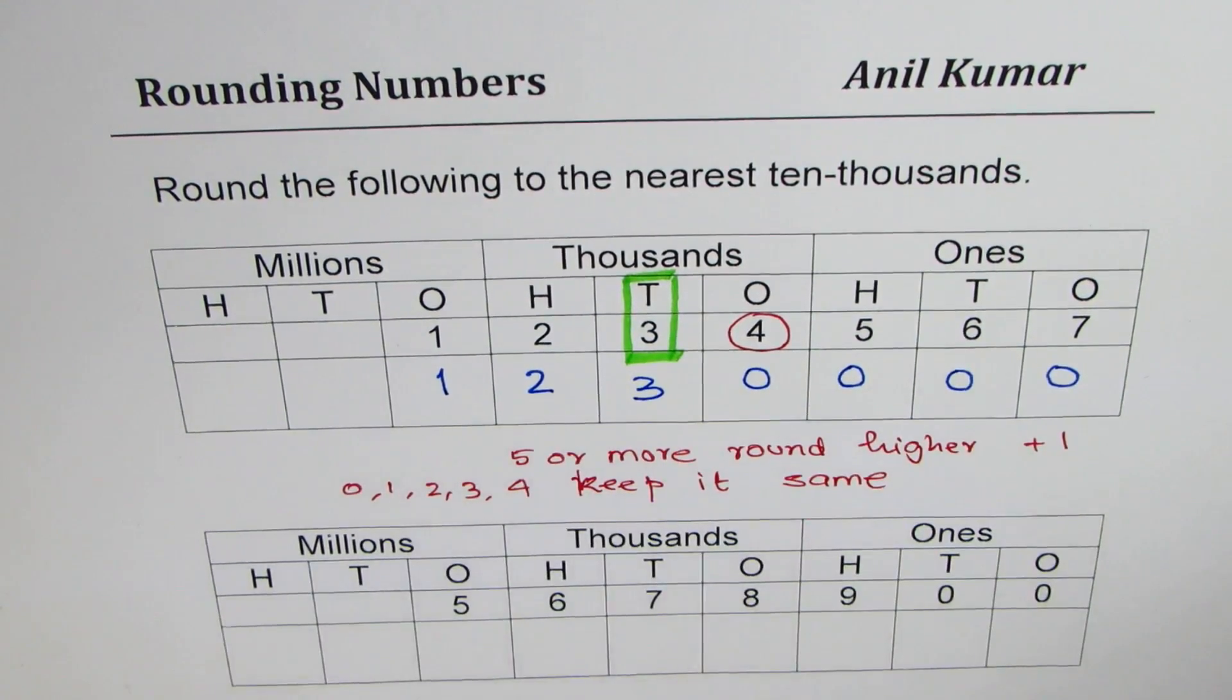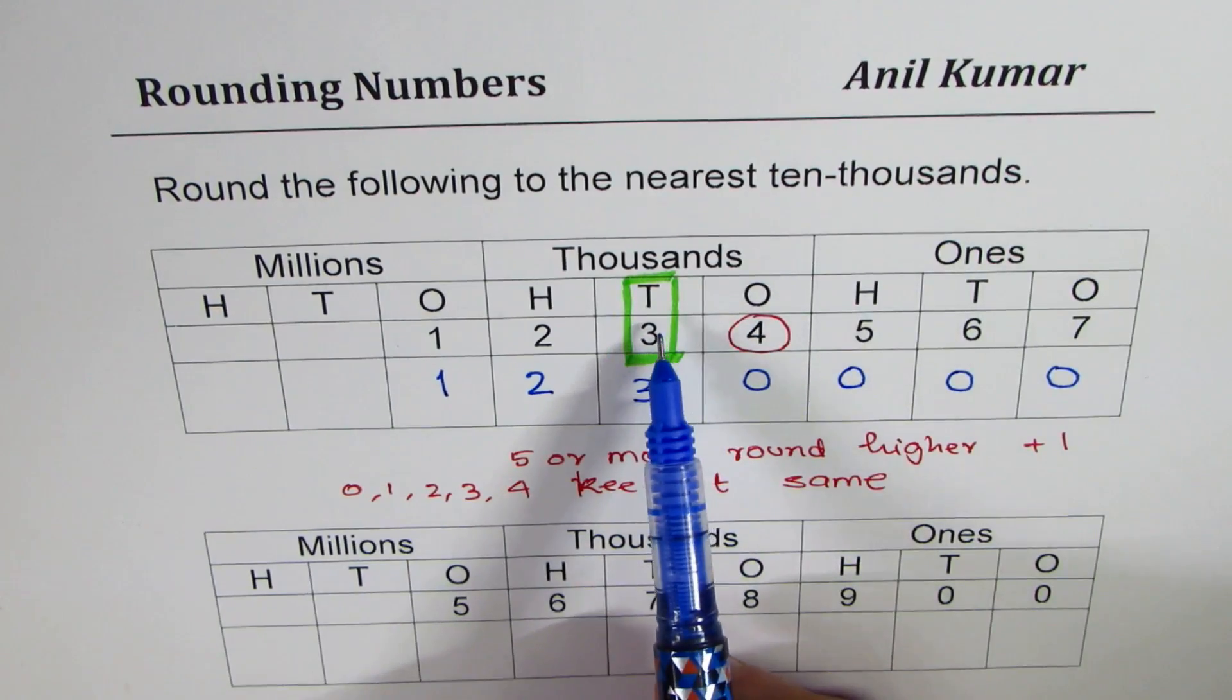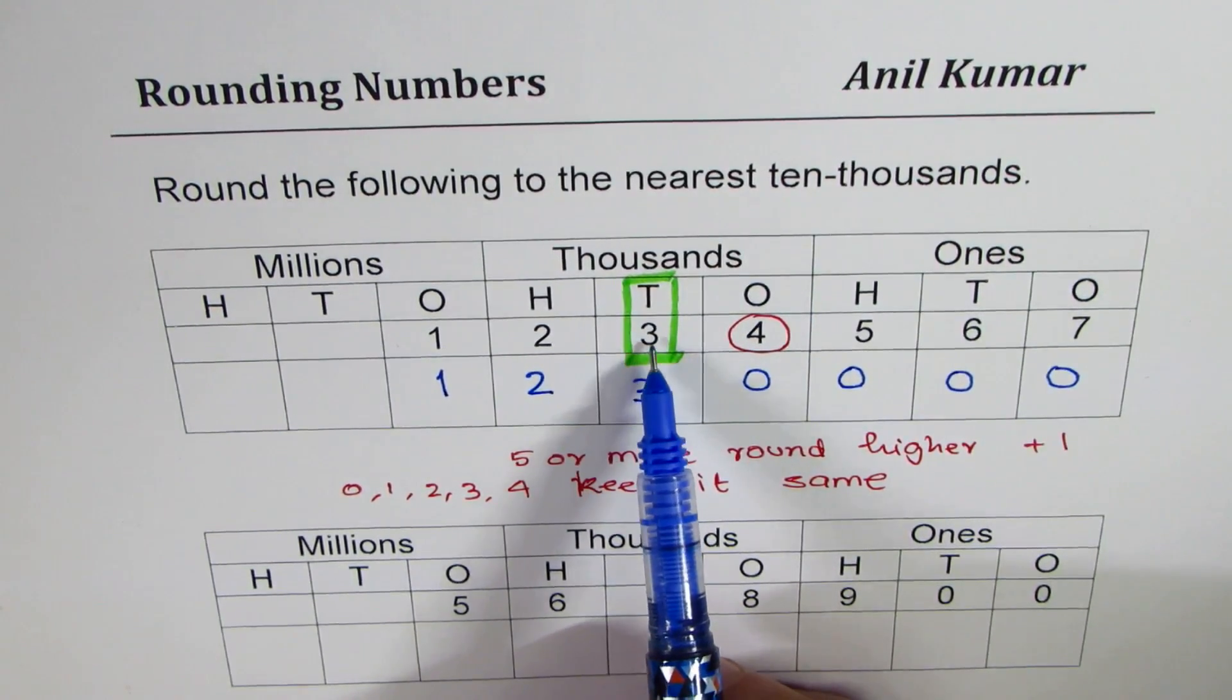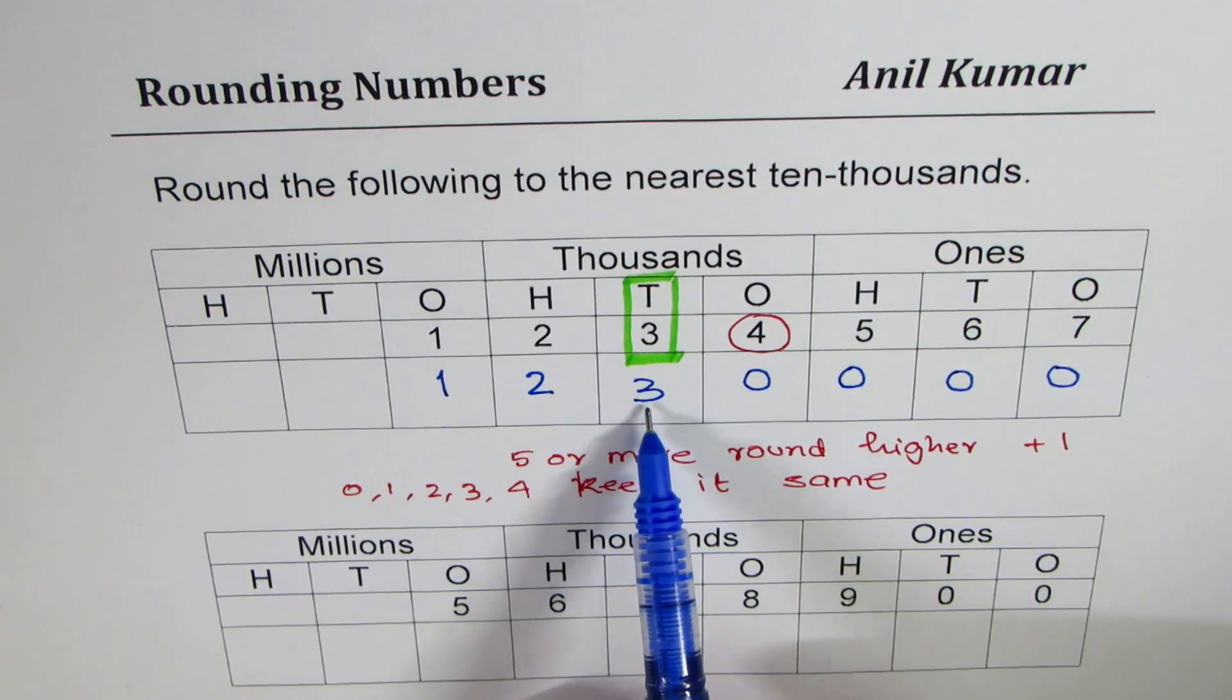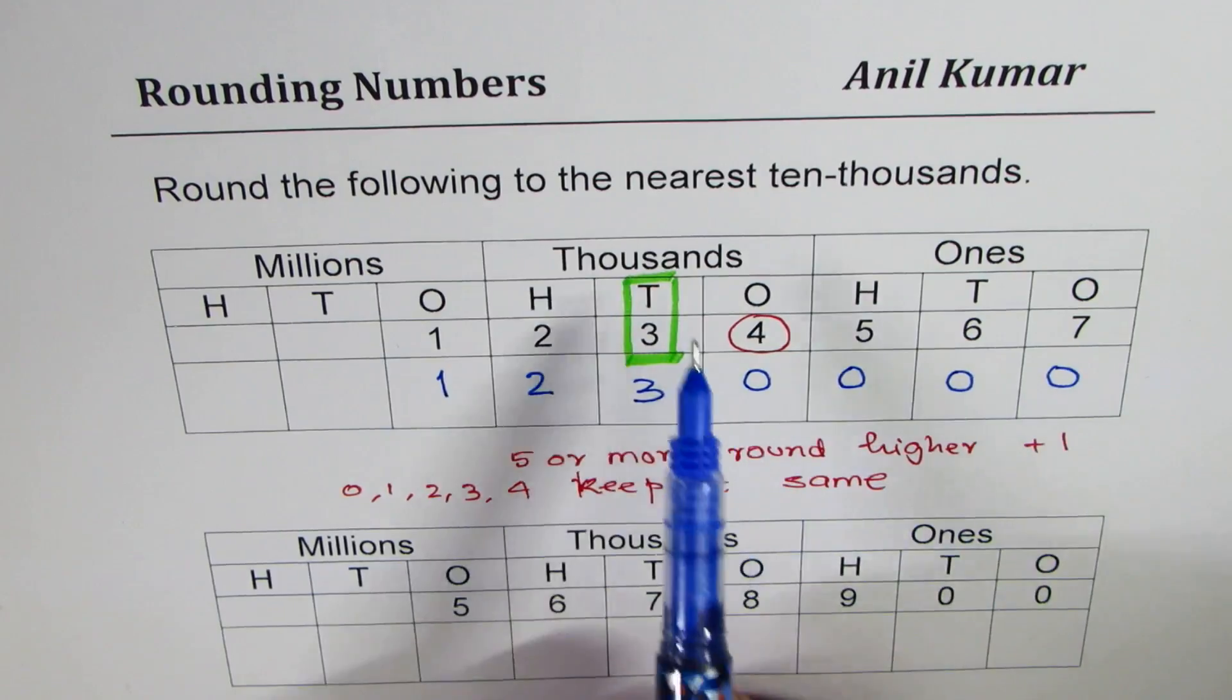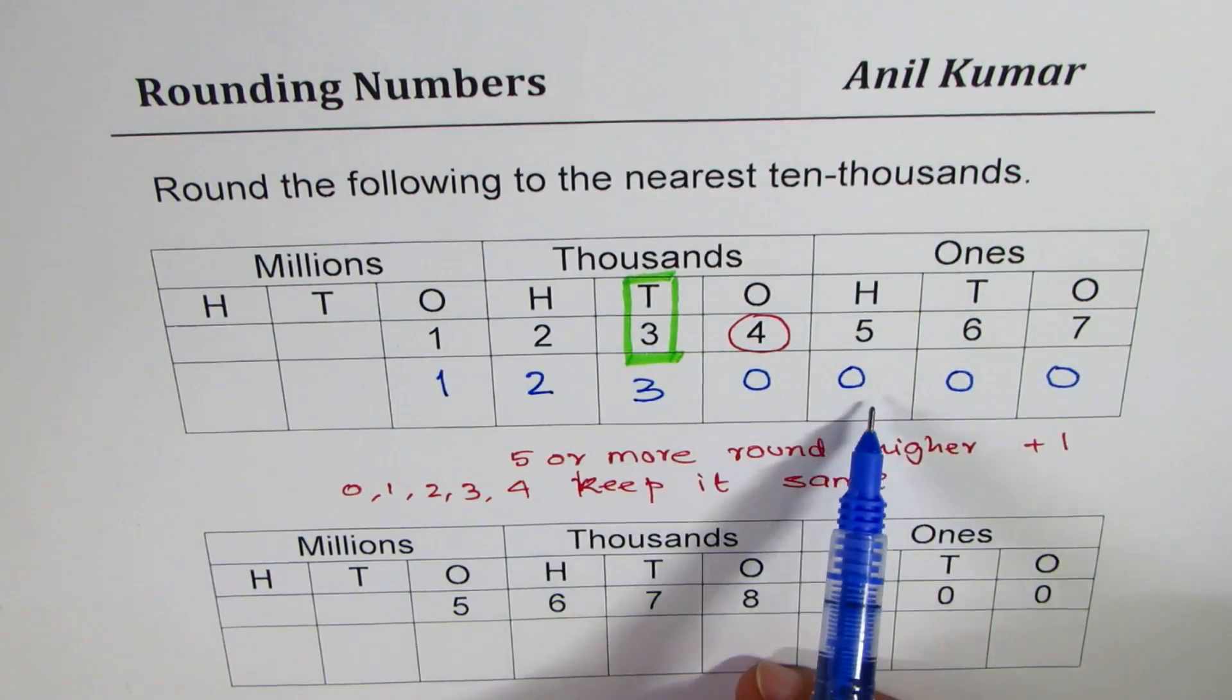So this is the strategy which you should use to round the numbers to ten thousands. Once again look at the number at ten thousands place. Now that number could change or can remain same. The numbers to the right will become zero. That is what we mean rounding to nearest ten thousands. So we have four zeros.